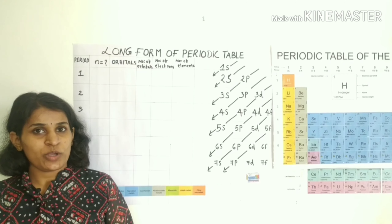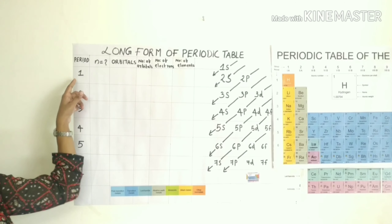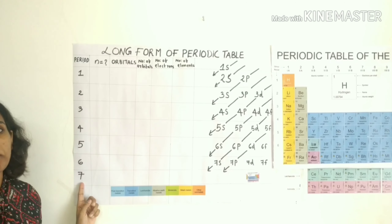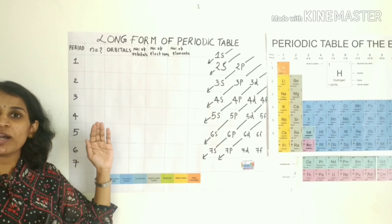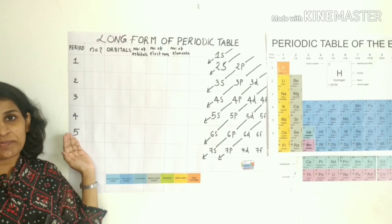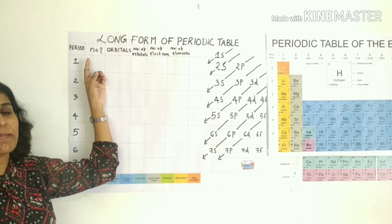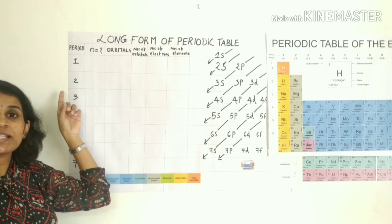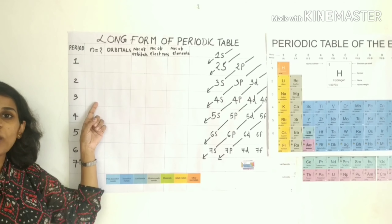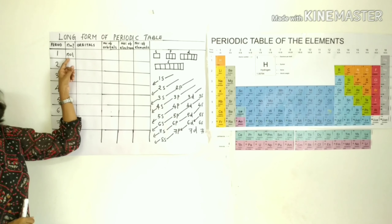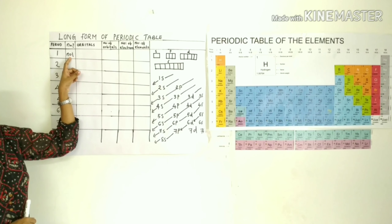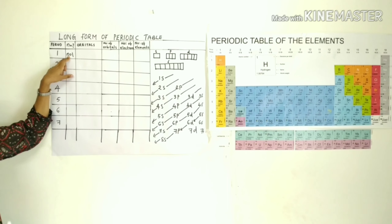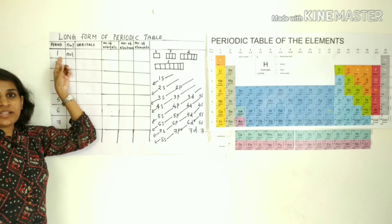We call them 1st period, 2nd period, 3rd period, 4th period, 5th period, 6th period, 7th period — that's 7 periods. The principal quantum number corresponds to the period number. Elements with principal quantum number n=1 are in the first period, n=2 in the second period, n=3 in the third period.